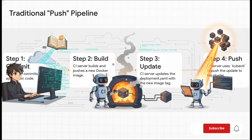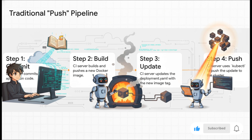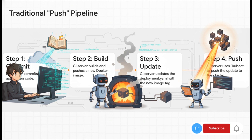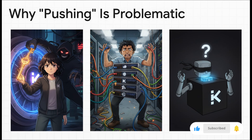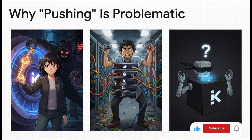Let's walk through that typical push pipeline. A developer commits their code, a CI server like Jenkins kicks in, it runs tests, builds a new container image, and updates a YAML file somewhere. Then — and this is the key part — the CI server itself runs kubectl apply to push that change into the cluster. This is exactly where the headaches start. It's a huge security risk: for Jenkins to push changes, you have to give it admin-level credentials to your cluster, and those secrets are now living completely outside your cluster's secure boundary.